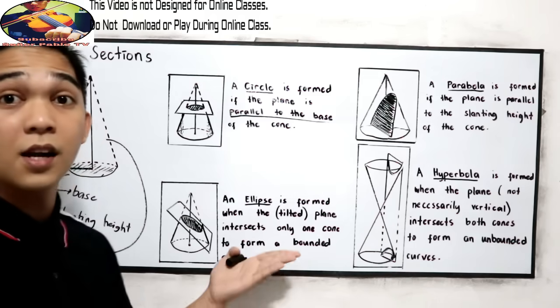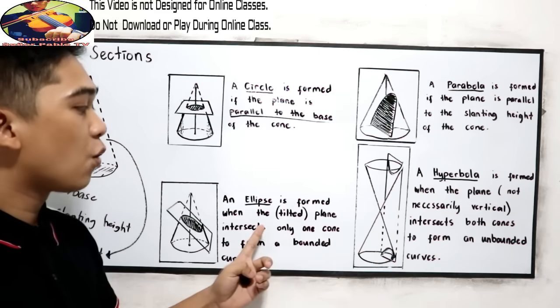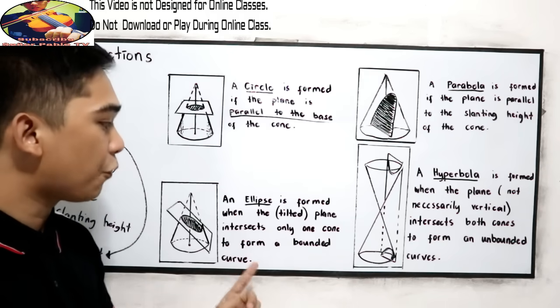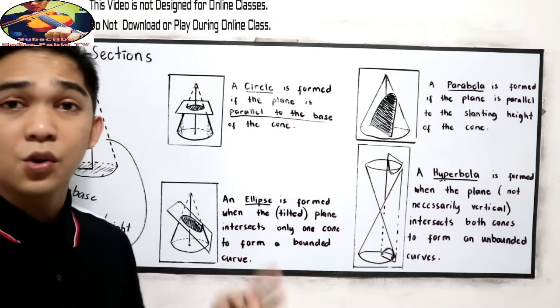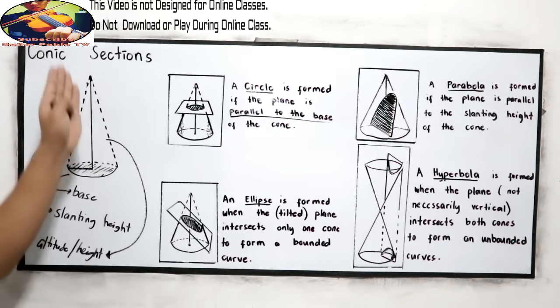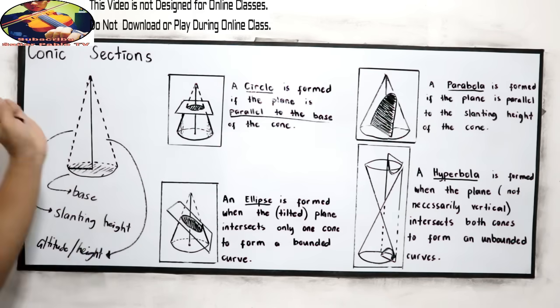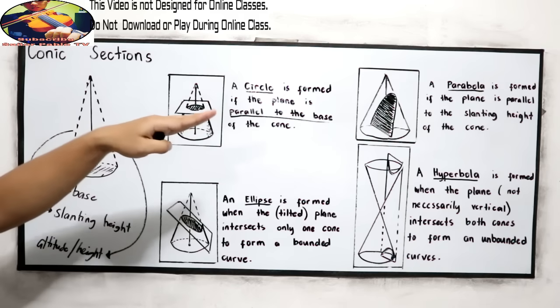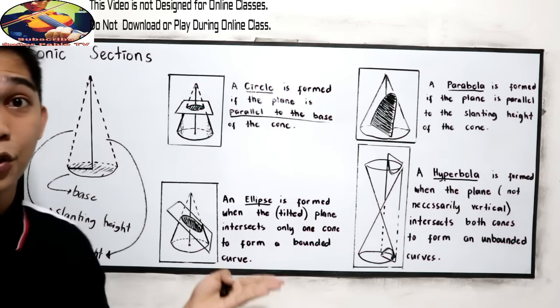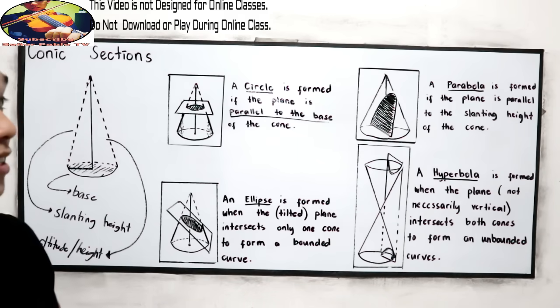And the last one is the ellipse. An ellipse is formed when the tilted plane intersects only one cone to form a bounded curve. In short, if you're going to cut a diagonal part in our cone, any part that is not parallel to the base and not parallel to our slanting height, that will form an ellipse.